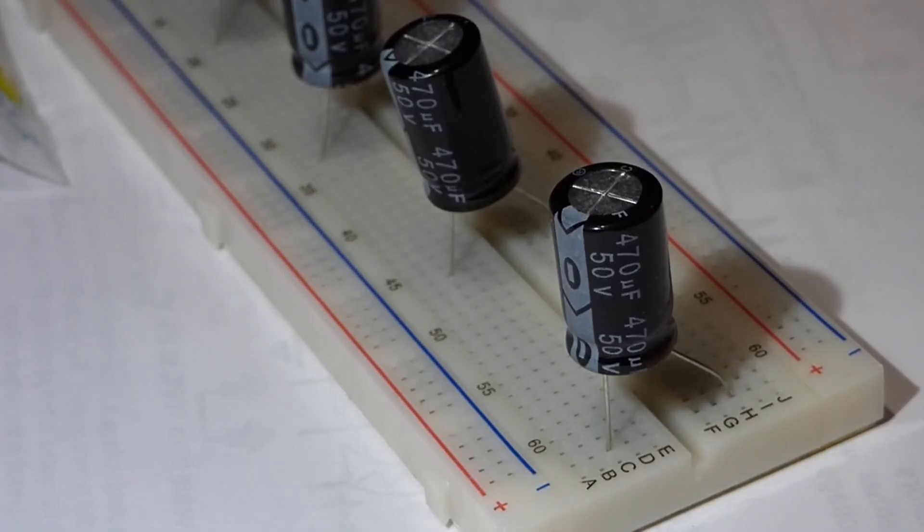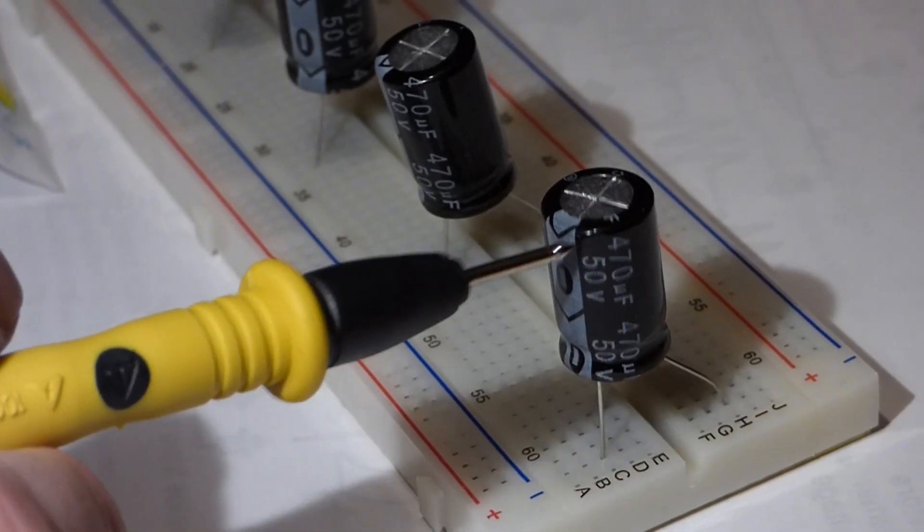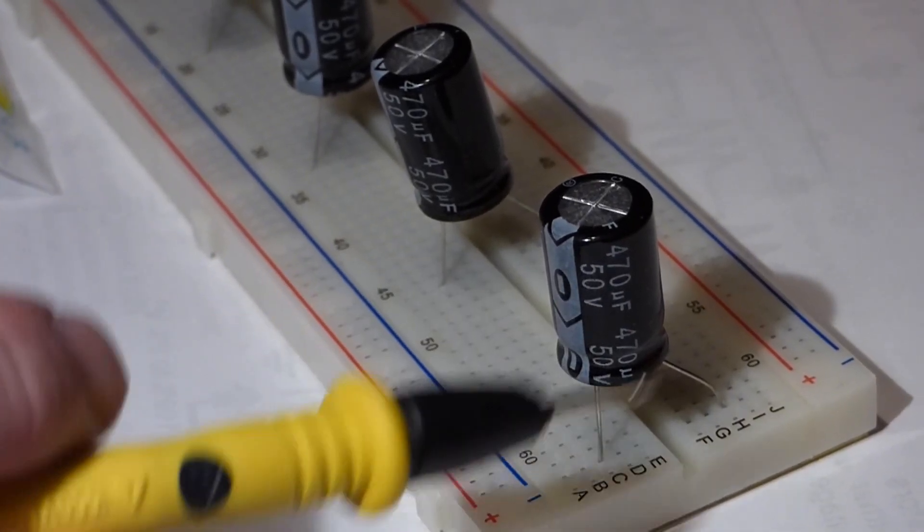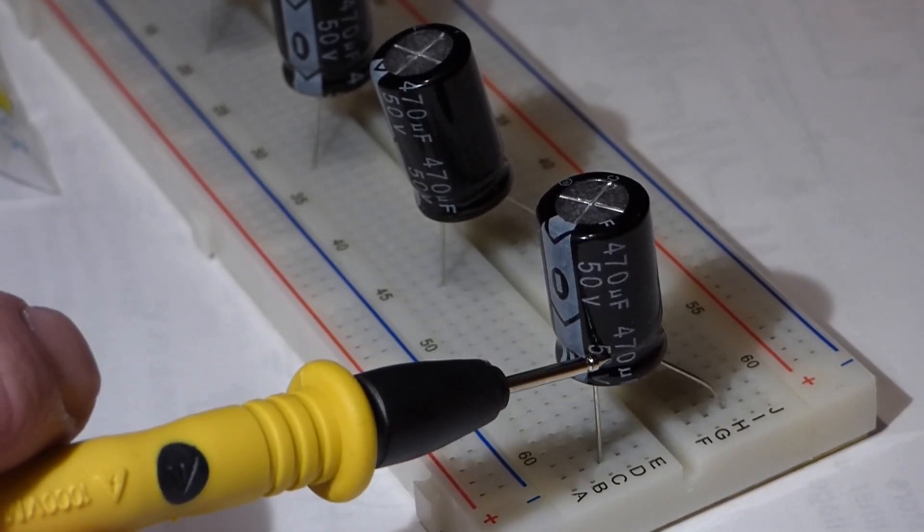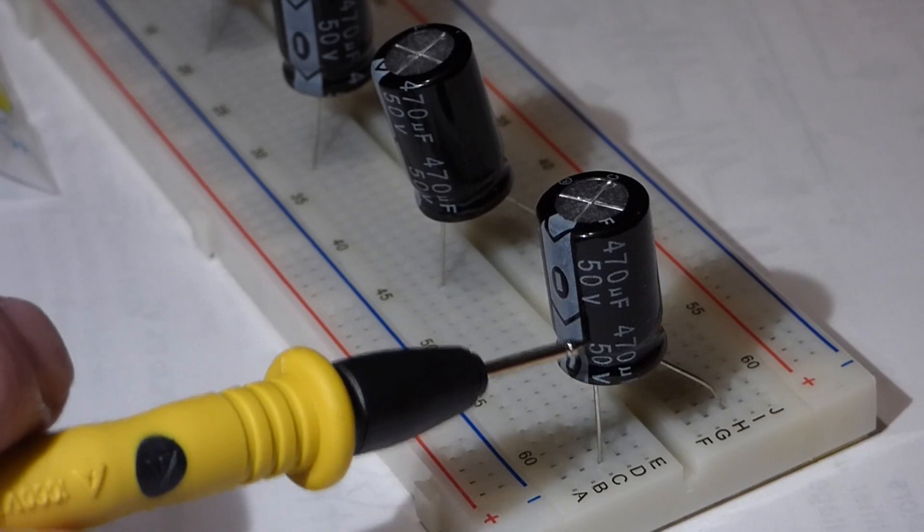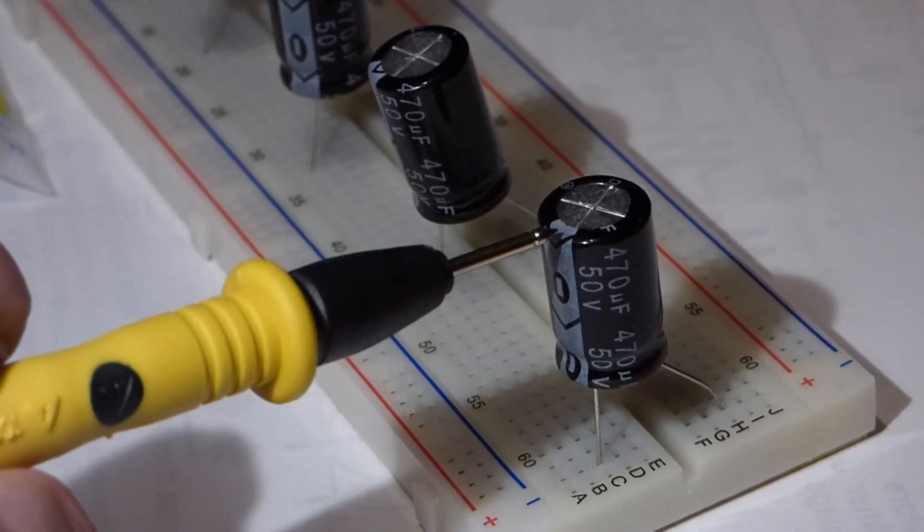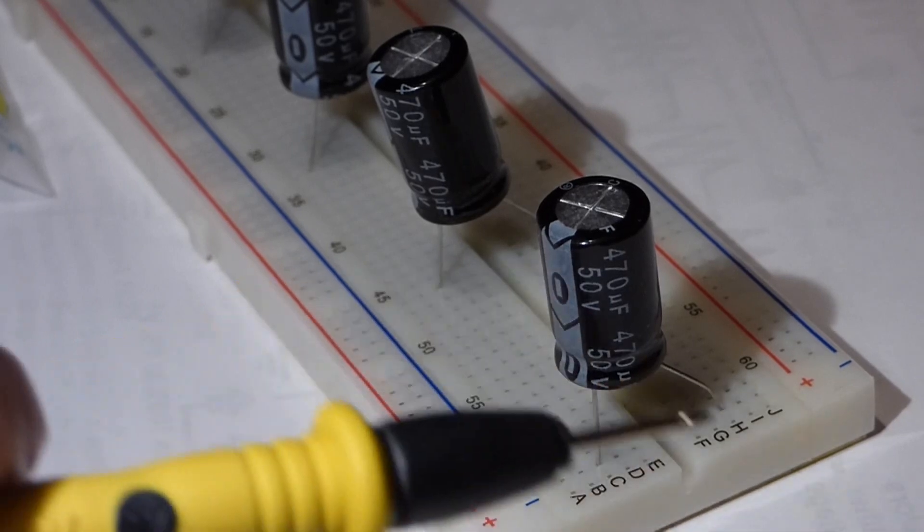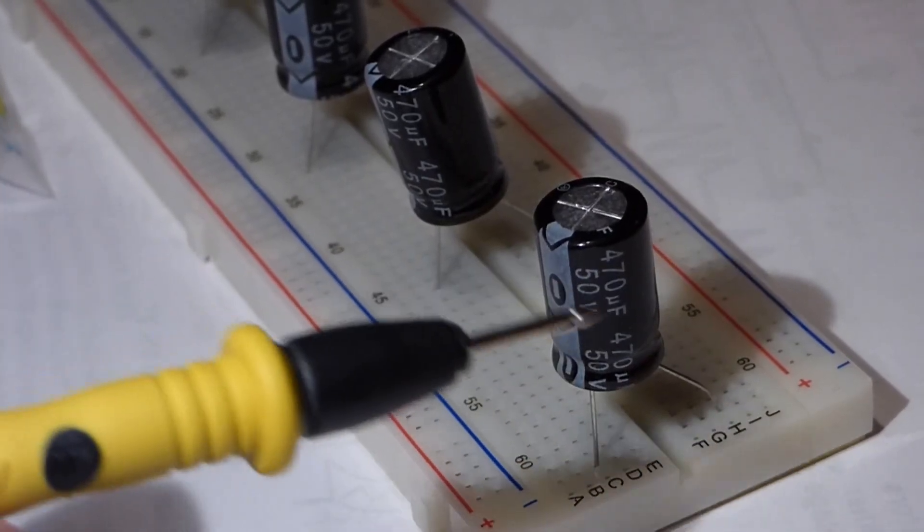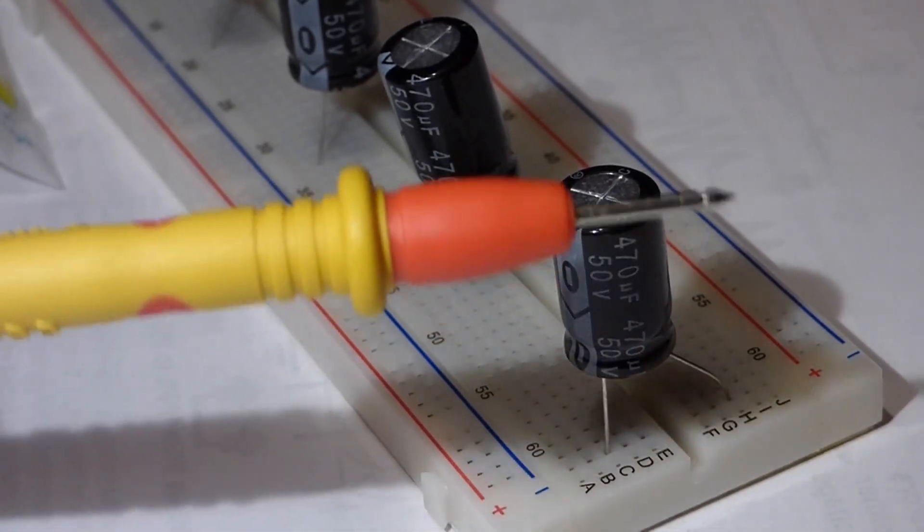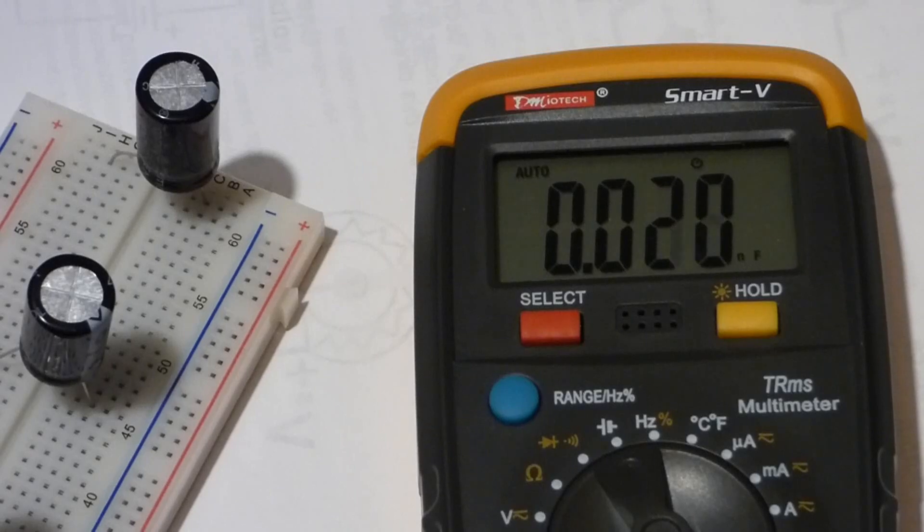Here I put five of the same rated capacitors onto a breadboard. These are 470 microfarad capacitors rated for 50 volts. These are electrolytic; they have polarity. This is the negative side, so when we take measurements we'll put the black probe on the negative side and the red probe on the positive side.